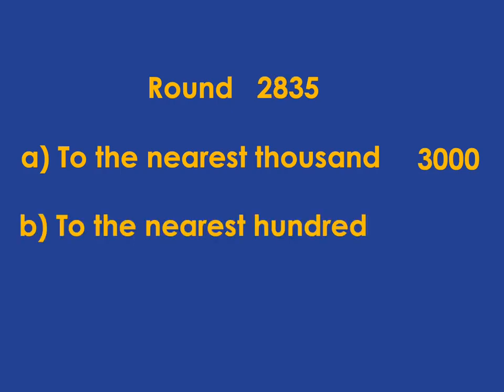What about if you were asked to round 2,835 to the nearest 100? In this case, you look at the tens. You know you're going to lie between 2,800 and 2,900. But with that 3 in the tens, you're lying below the halfway mark, and so you will round down to 2,800.